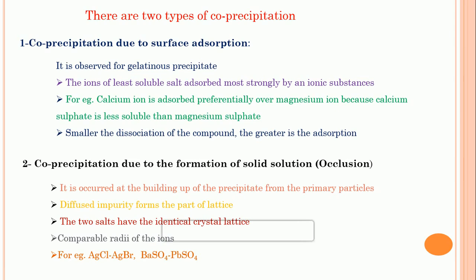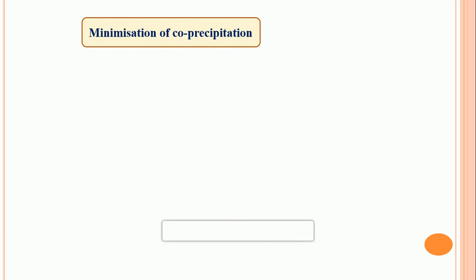Co-precipitation is the contamination of the precipitate by substances which are normally soluble in the mother liquor — those substances are already soluble in that solvent during precipitate formation, and they contaminate the precipitate. Now we will discuss some conditions which can minimize co-precipitation, known as minimization of co-precipitation. The first condition is that the solution should contain a minimum amount of impurities.